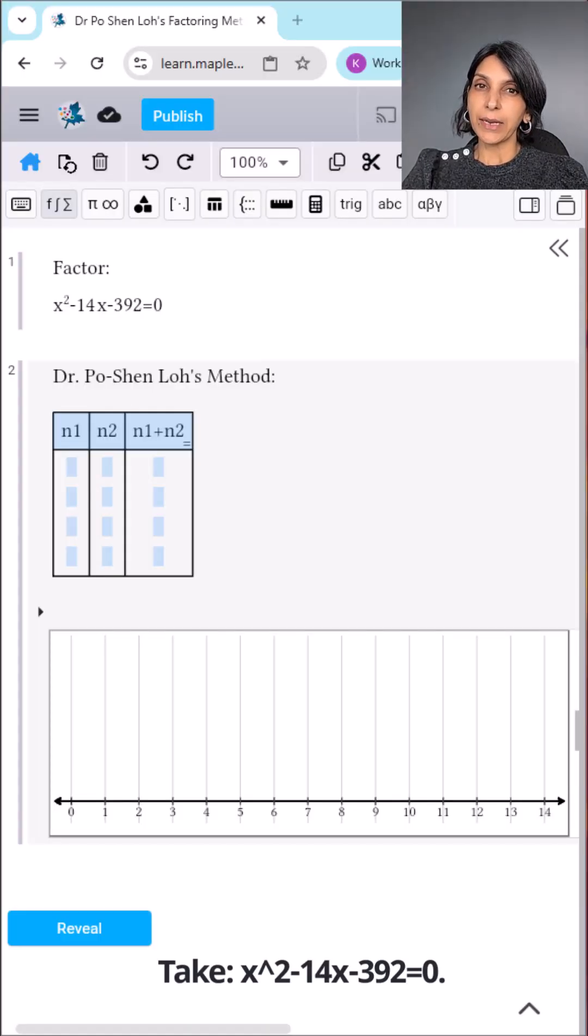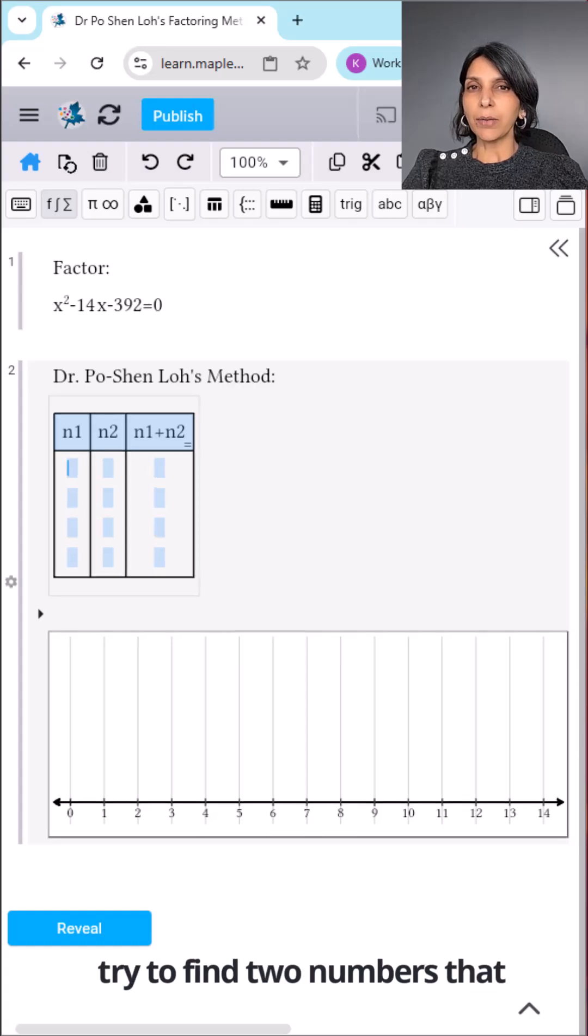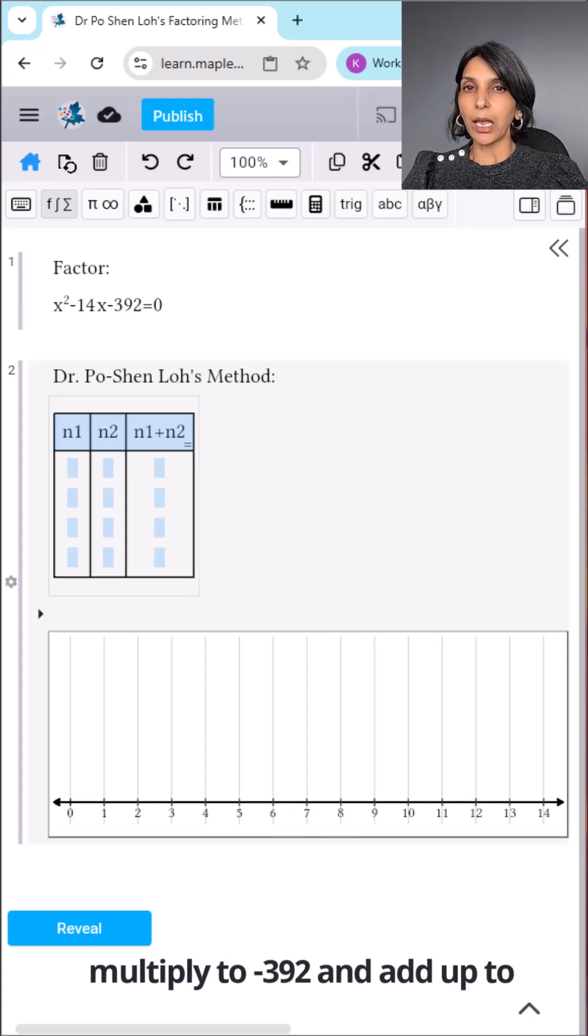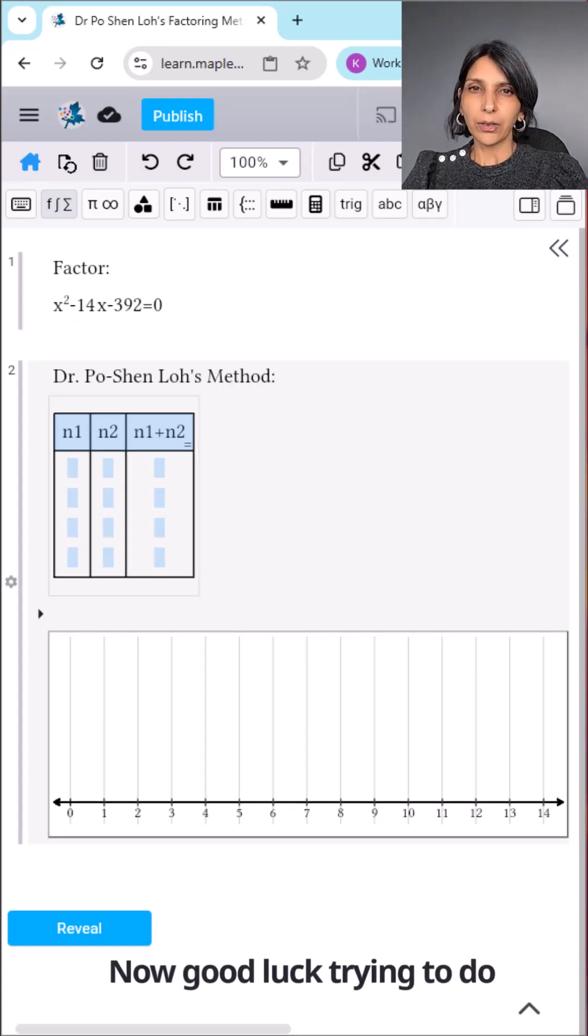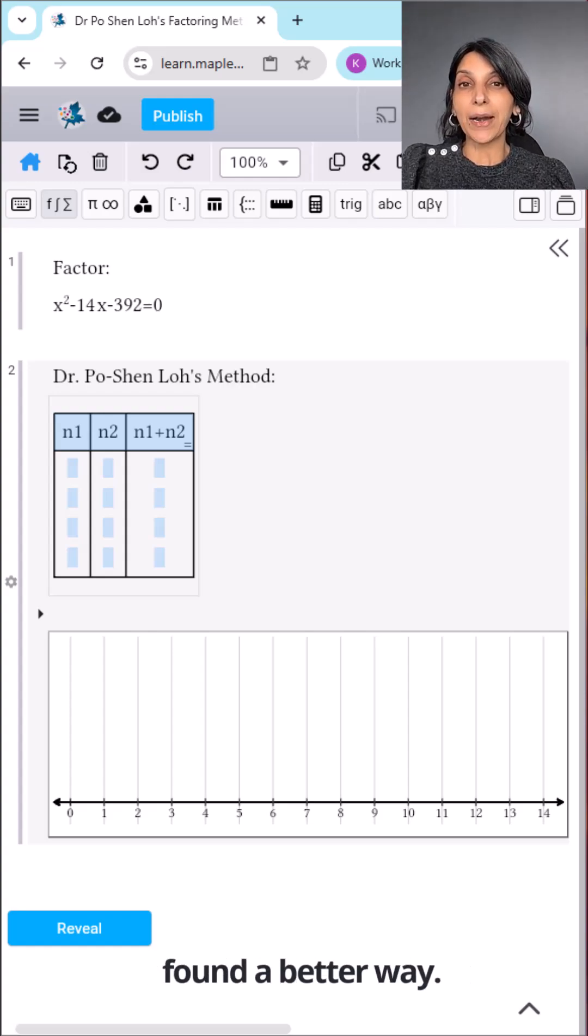Take x squared minus 14x minus 392 equals 0. With the usual method, you try to find two numbers that multiply to negative 392 and add up to negative 14. Now good luck trying to do that in your head. But Dr. Po Shen Lo, he found a better way.